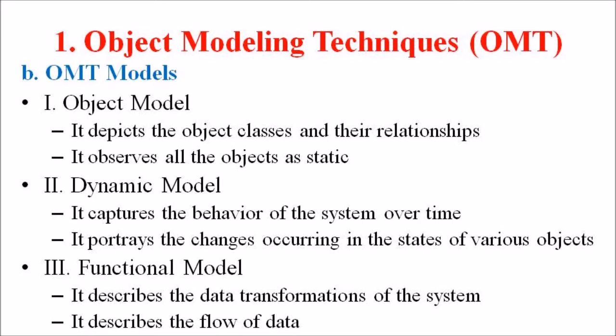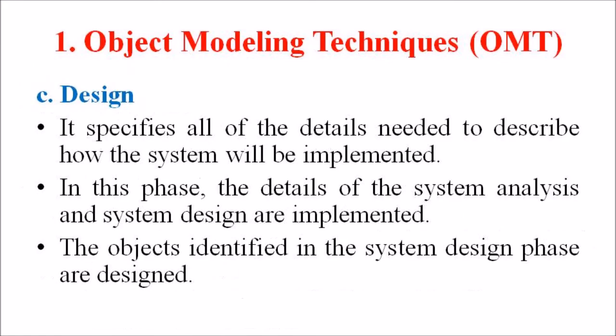The dynamic model portrays the changes occurring in the states of various objects with events that might occur in the system. The third is the functional model, which describes the data transformation of the system, the flow of data, and the changes that occur to the data throughout the system. Finally, the design phase specifies all the details needed to describe how the system will be implemented, and the objects identified in the system design phase are designed.